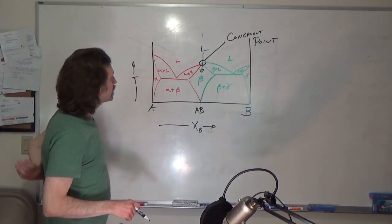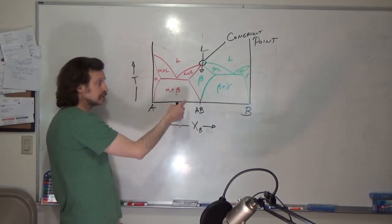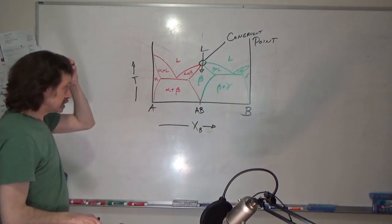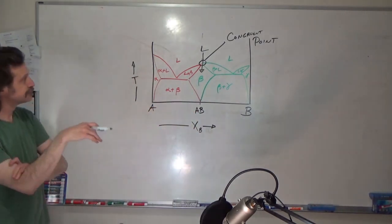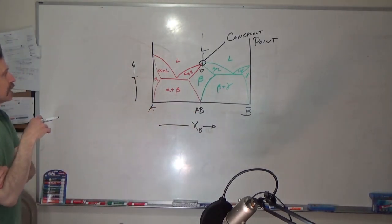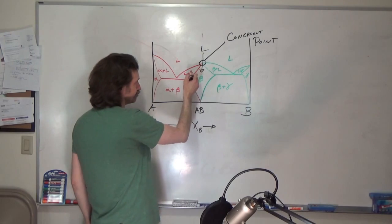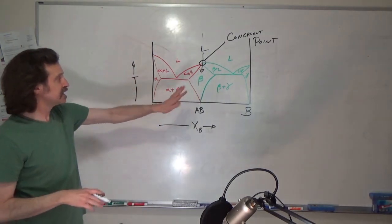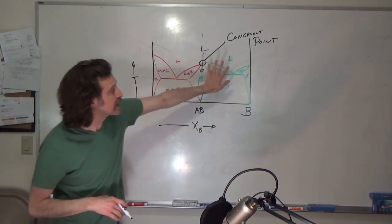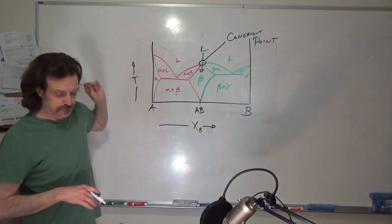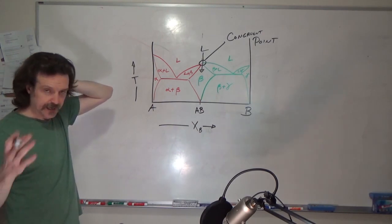It's also interesting that alpha is a solid solution and beta is also a solid solution. If you come down through this region, you get liquid plus beta forming beta, and then alpha plus liquid — everything behaves exactly the way you'd expect for two completely separate binary eutectics.